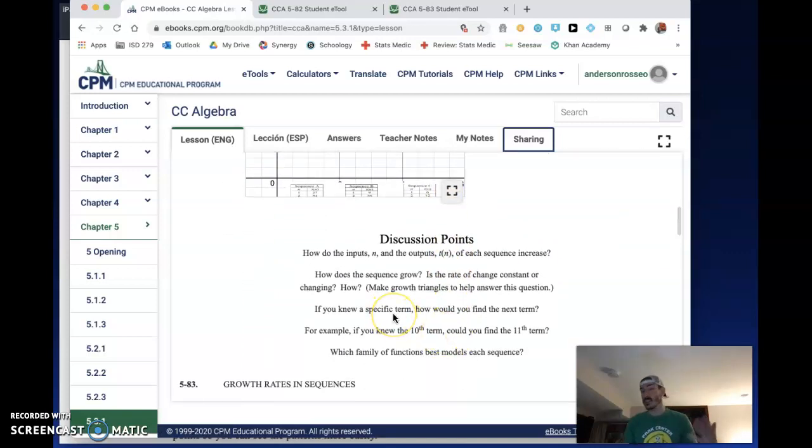What we want to do is talk about some things, keeping these in mind: how do the inputs and outputs change? Is the rate of change constant or does it change every time? I'll show you how we can figure that out. If we know a term, is the next term predictable? If you know the 10th, could you find the 11th? And finally, this might be the hardest one - which family of functions is the best description of each of these types of sequences?